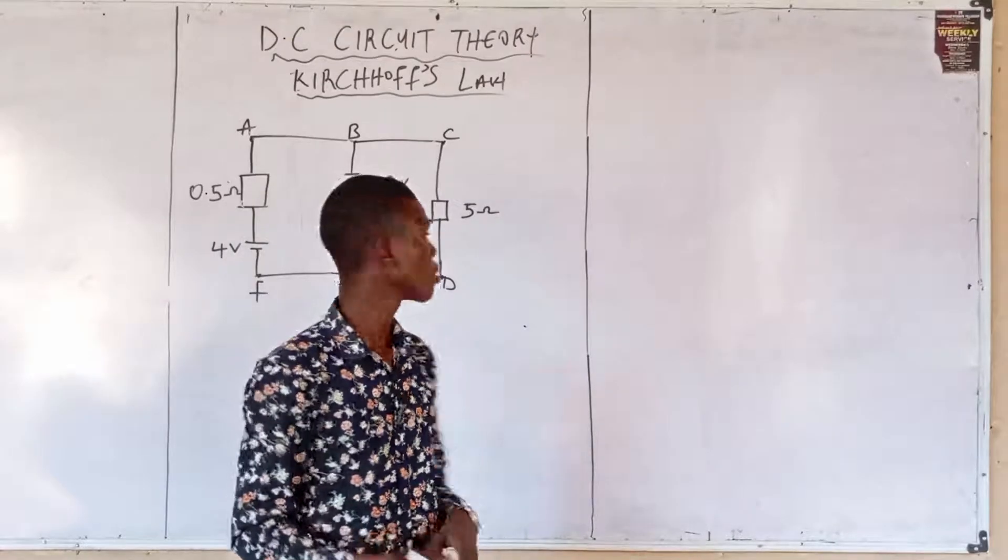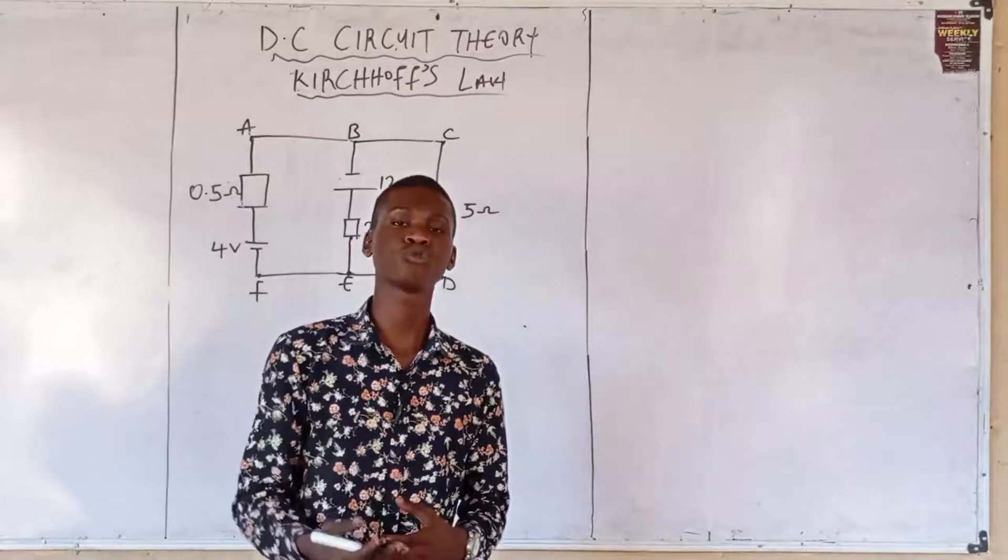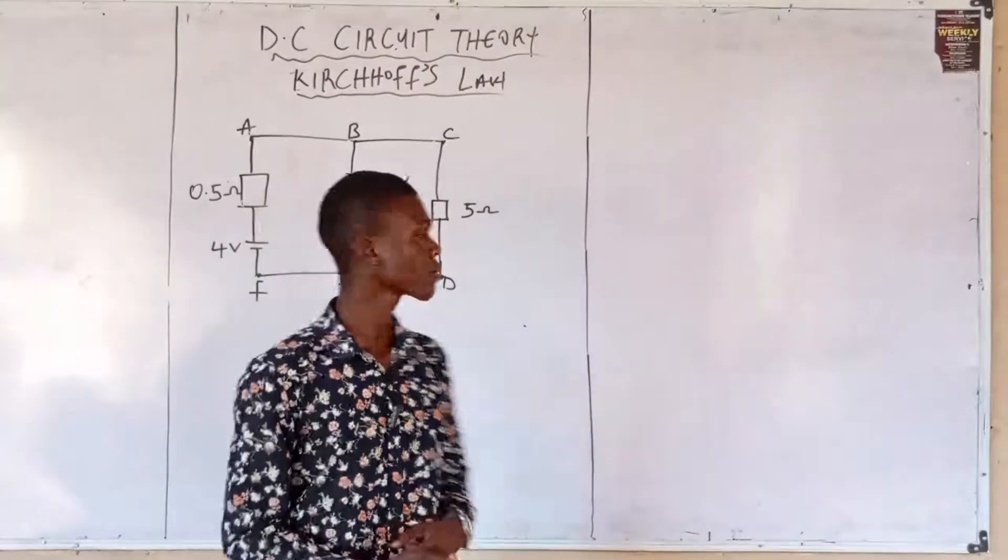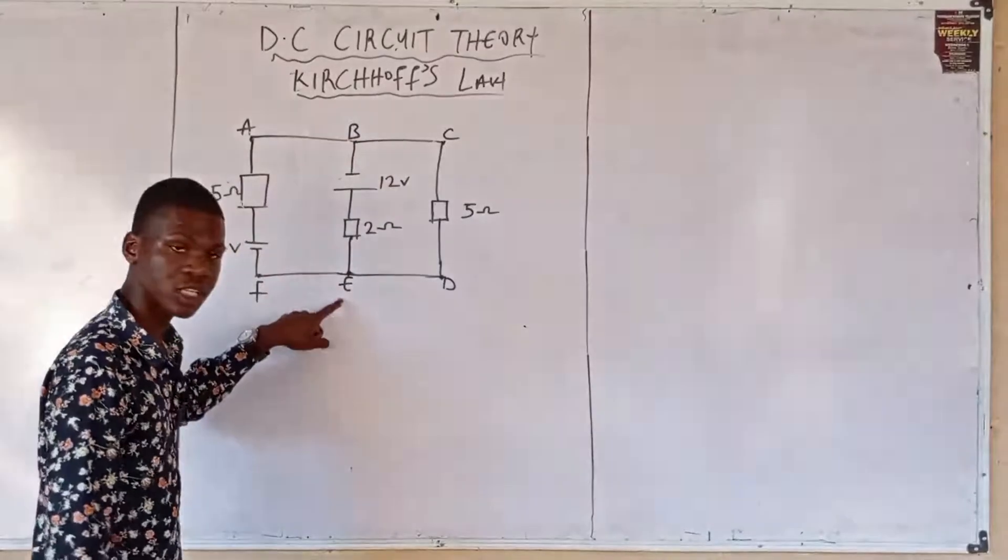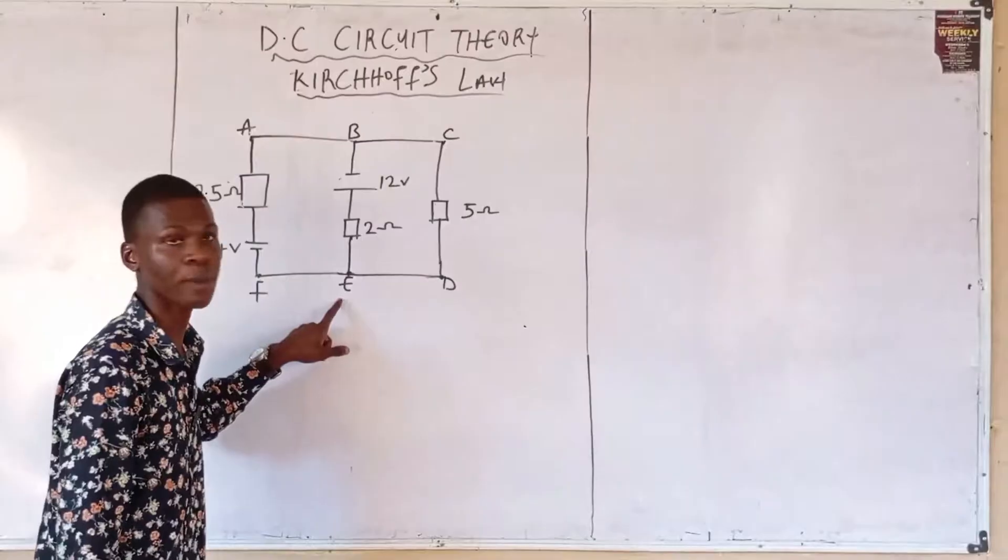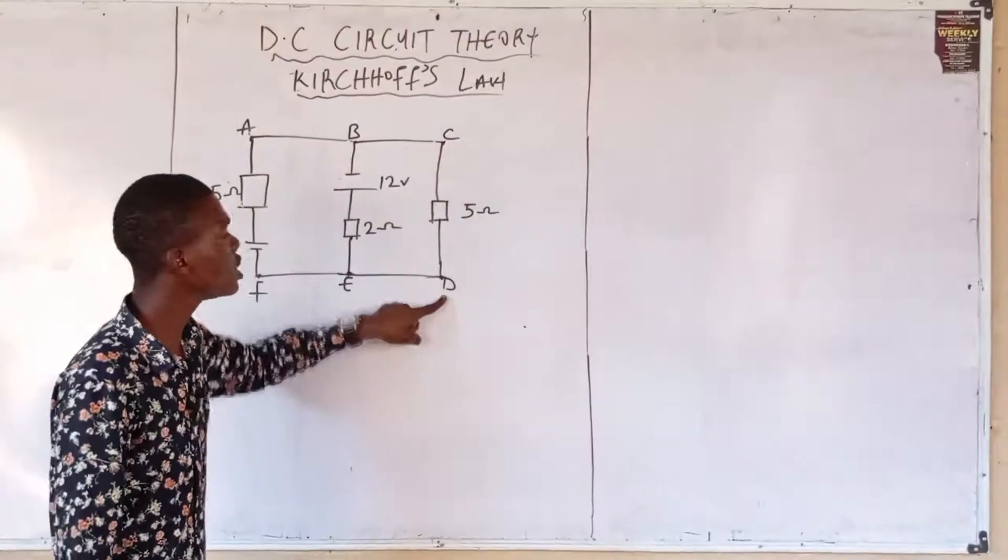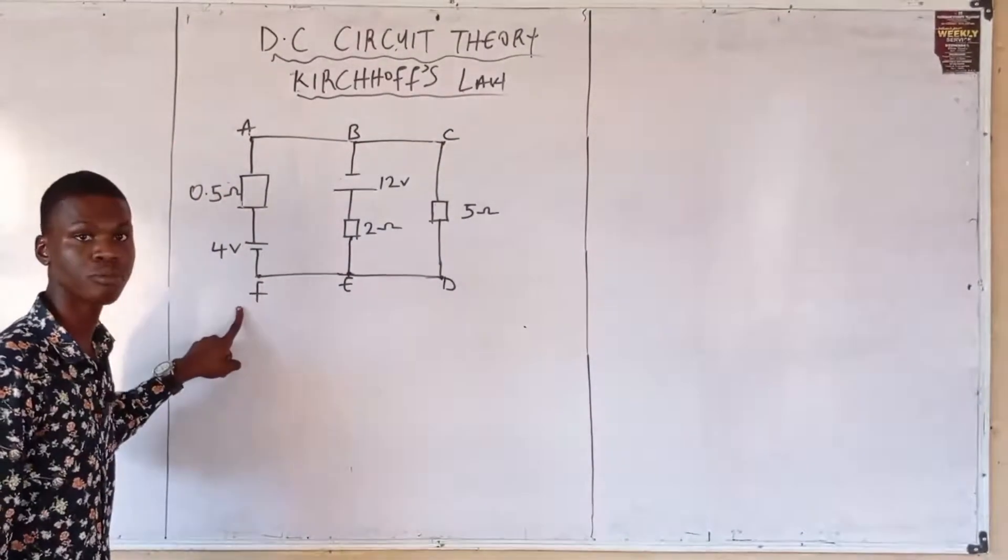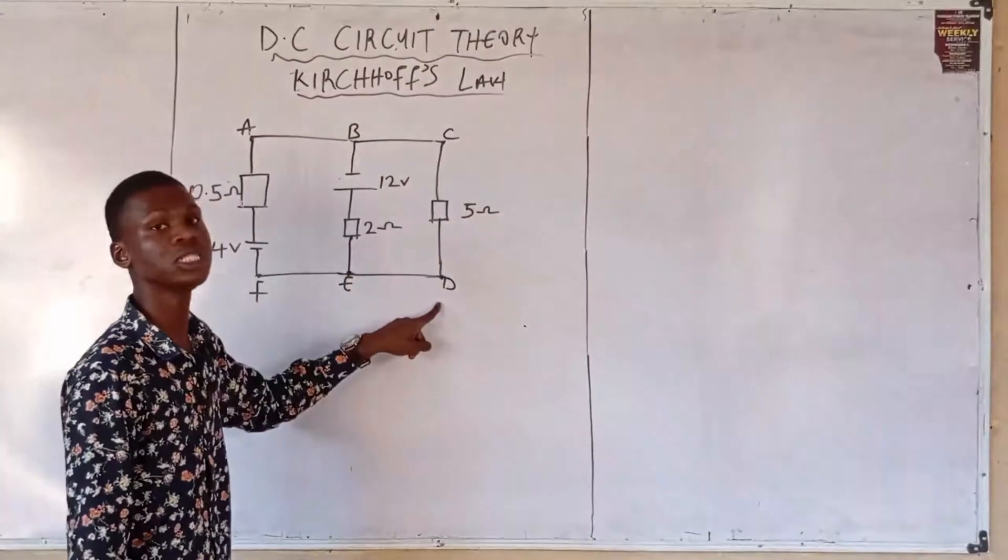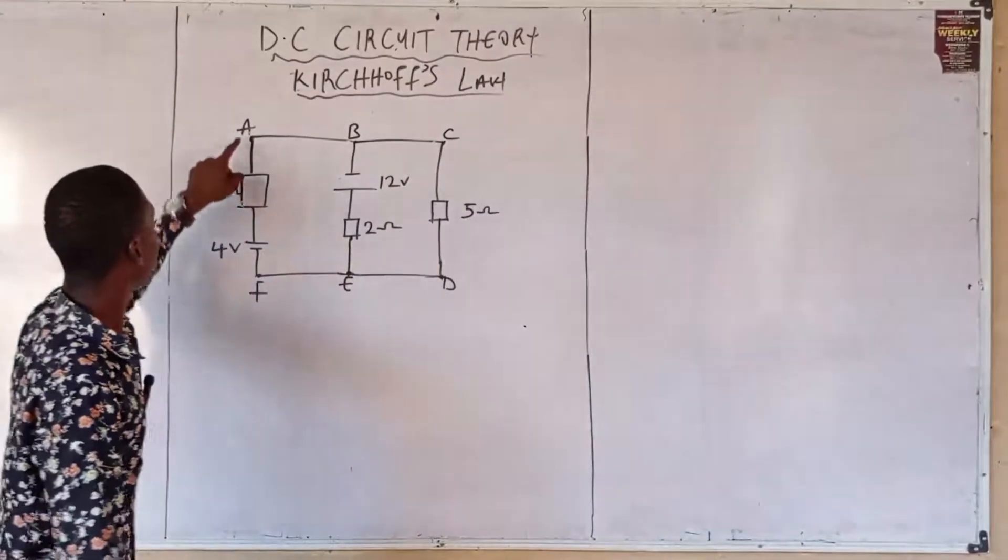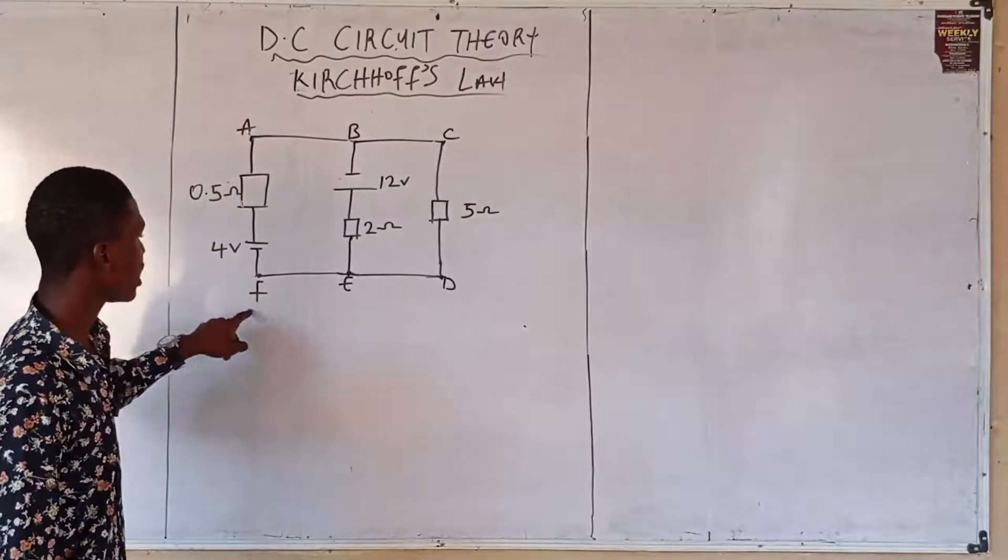Branch: we said a branch is a part in a circuit element that lies between two junctions. BE is a branch; point B is a junction, point E is also a junction, so it is a branch because this wire lies between two junctions. Similarly, CD is also a branch, AF is also a branch. Mind you, point A is a node, point F is a node, point C is a node, and point D is a node—wires AF and AB are connected at A, similarly wires AF and FE are connected at F.